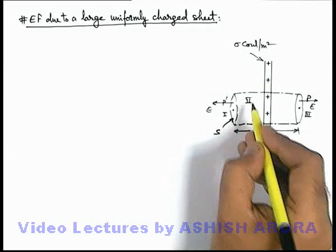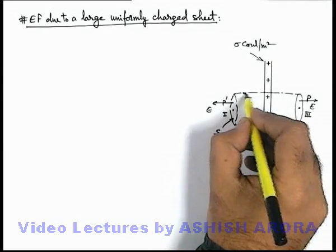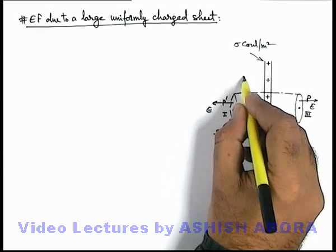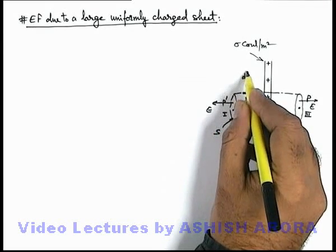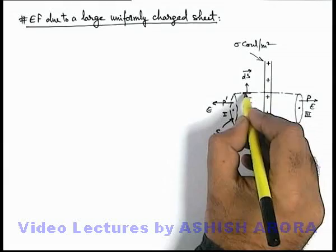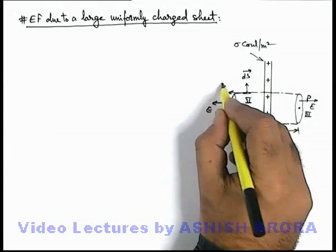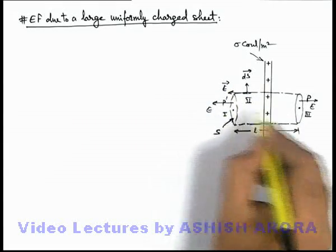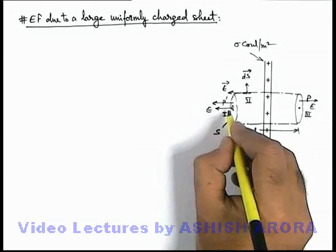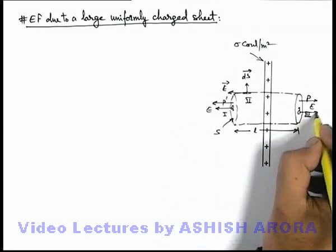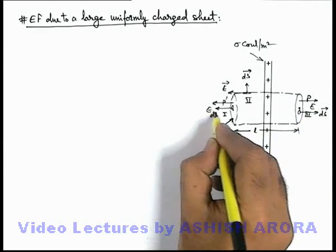So in this situation we can say for the section 2, area vector at any point dS vector will be perpendicular to the surface, and due to the sheet electric field will be parallel to the surface. Whereas for 1 and 3 always the area vector and electric field vector are in same direction.